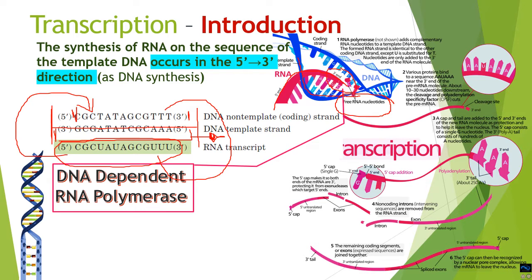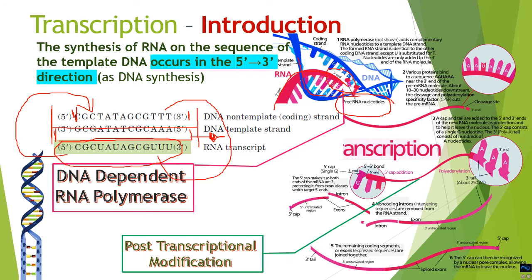The polymerases involved in transcription are DNA-dependent RNA polymerases, which utilize DNA as a template to synthesize RNA. In eukaryotes, transcription alone is not the whole process — the RNA synthesized is immature and must be matured through post-transcriptional modifications, usually involving three processes: 5' capping, 3' polyadenylation tail addition, and excision of introns. These convert the immature RNA into mature RNA, ready to be fed to the translation machinery to generate proteins.